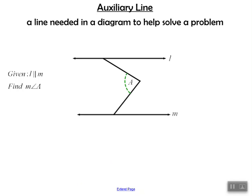Until now, we've been working with two parallel lines cut by one transversal, and we can use our corresponding angles postulate, our alternate interior angles theorem, alternate exterior angles theorem, and consecutive interior angles theorem to find congruent and supplementary angles.